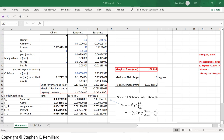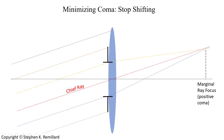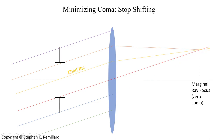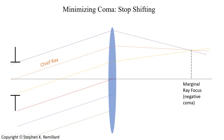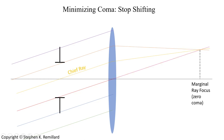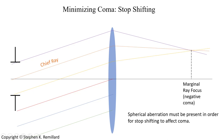If the lens is already made, you can use a stop to adjust coma. Placing an aperture stop in front of the lens and shifting it changes which ray is the chief ray, thereby changing the coma present. Moving the stop back and forth, you can find the position where marginal rays converge at the same place as the chief ray, eliminating coma. This works provided there is spherical aberration present — if there is no spherical aberration, you cannot adjust coma by stop shifting. Next topics will be astigmatism and curvature of field.